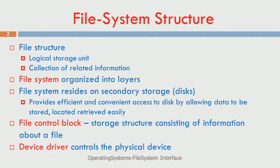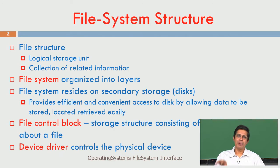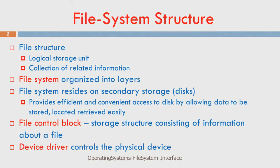What is a file? A file is a logical storage unit - just a collection of related information. Now, the file system is basically organized into layers. Like how we had a memory hierarchy where we had disk, then memory, then cache, then registers - like that the file system itself could have multiple layers, which we will get to know about.